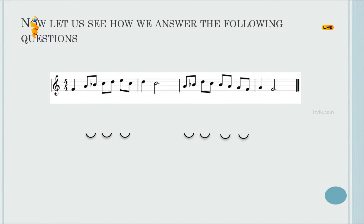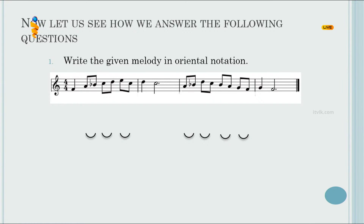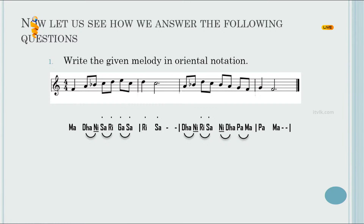Now let us see how we answer the following questions. Write the given melody in oriental notation. The question is given in western notation. The first note is a crotchet in F. Then C, D, E, and again C — those are in Uccha Saptakaya, that is the higher octave, so you have to write a dot above the notes.